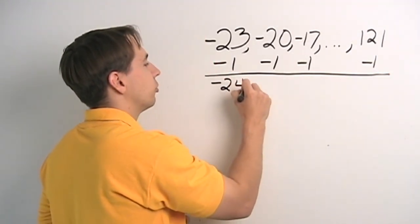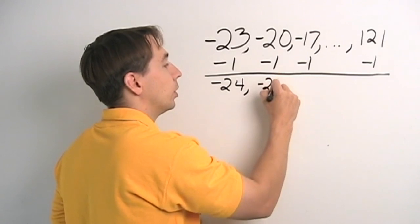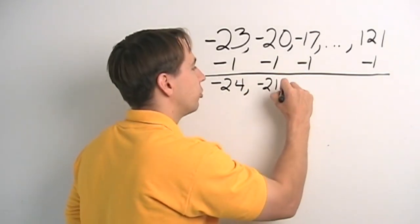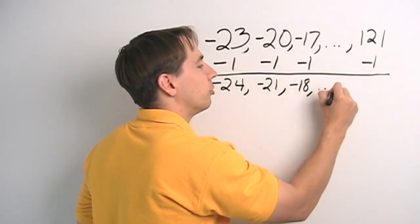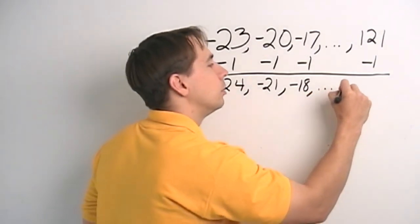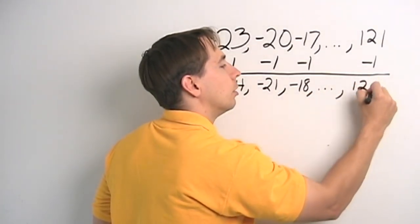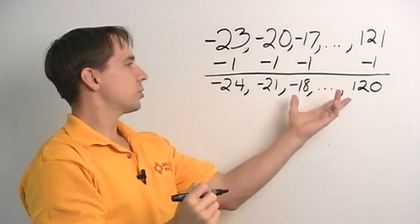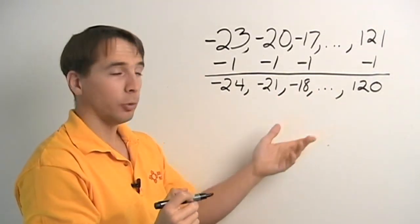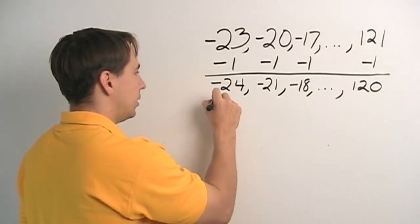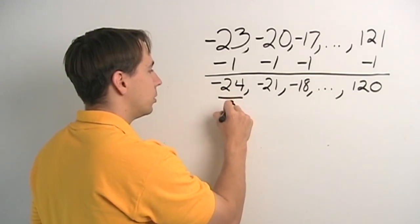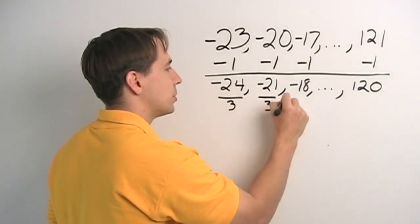And we have a new list. Negative 24, negative 21, and again, going down by 3 on each step. But now, all our numbers are multiples of 3. That's interesting. So, since this list, we're taking steps of 3, they're all multiples of 3, we think we know how to deal with that. We'll divide them all by 3 so that our steps will just be steps of 1.